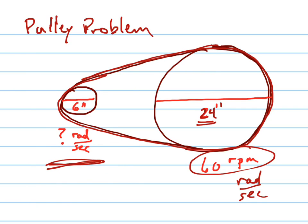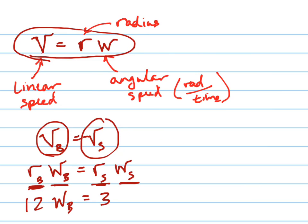Was it 6? Yeah, 6 was the diameter, so the radius is 3. Again, these are in inches times the angular speed of that wheel. So now if I divide both sides by 3, I find that 4 times the angular speed of the big wheel is equal to the angular speed of the small wheel.